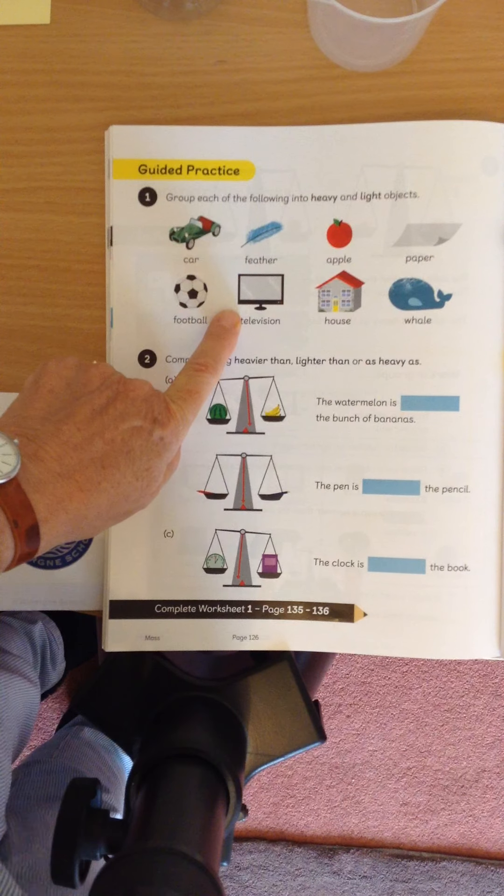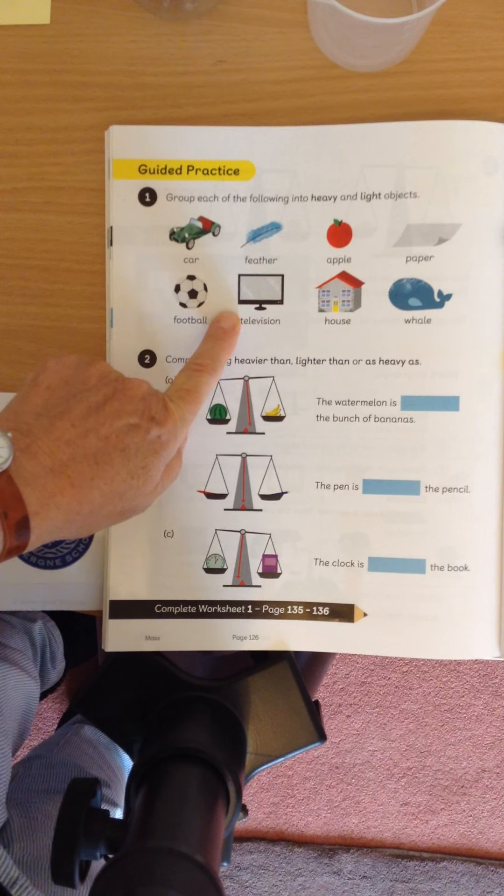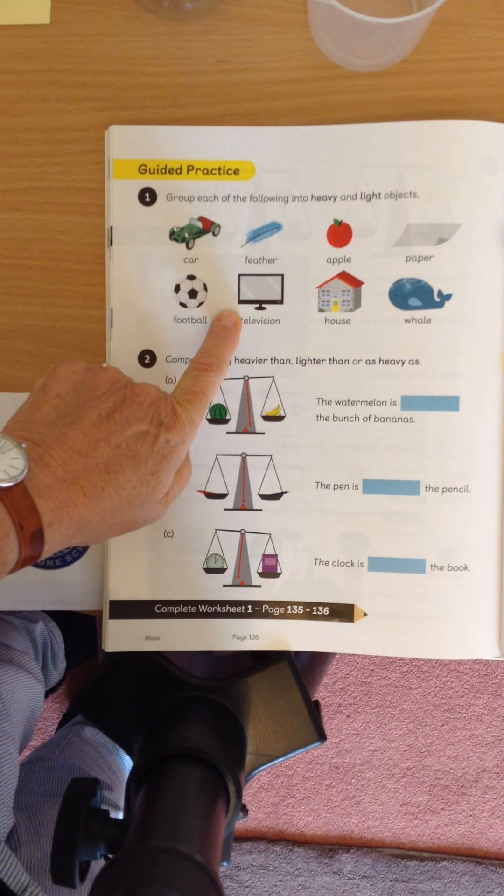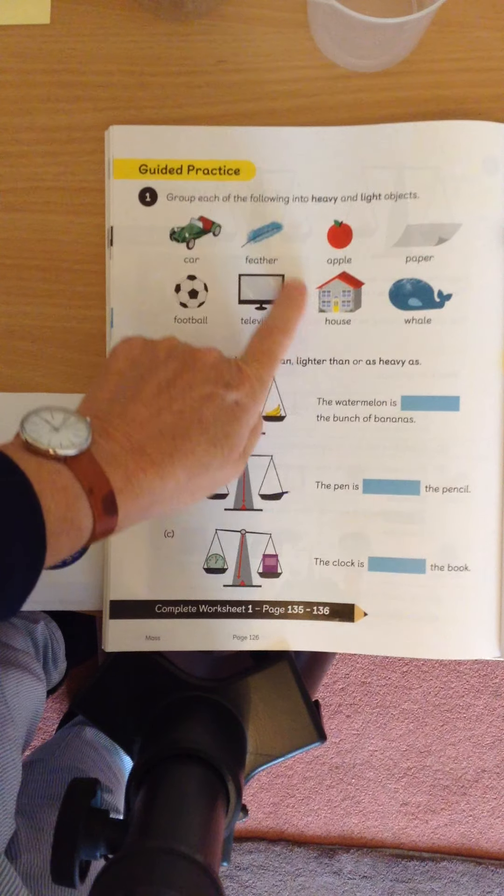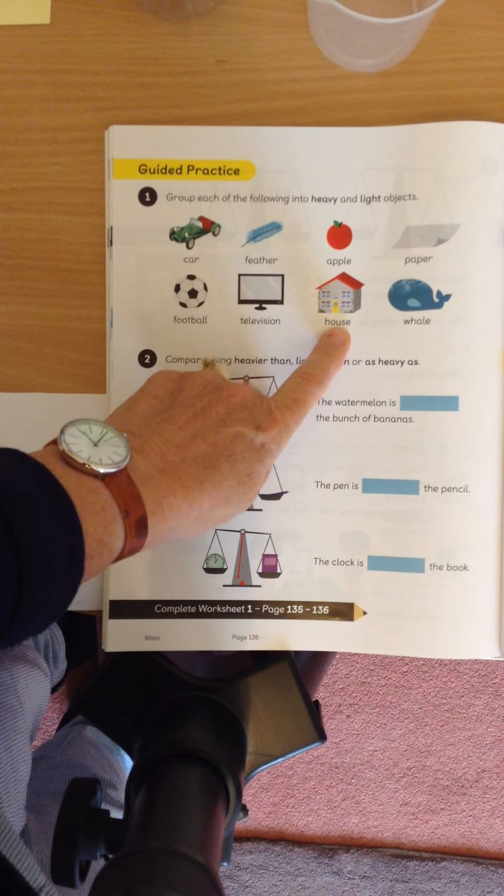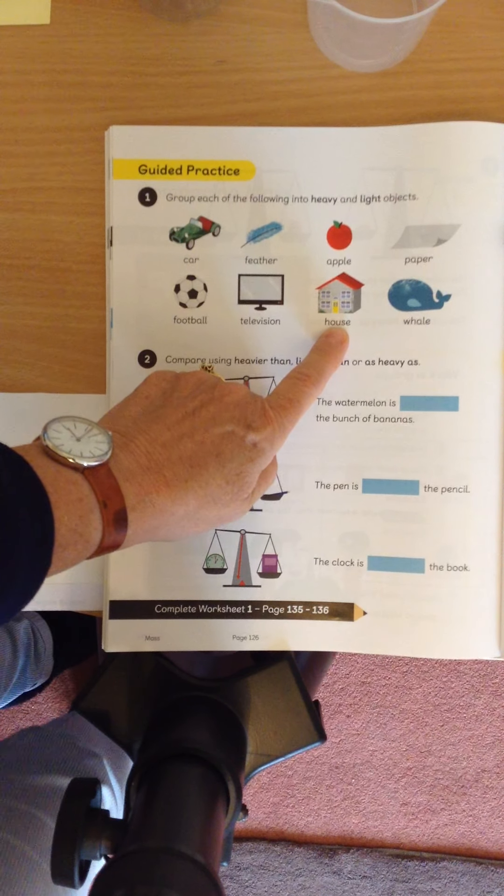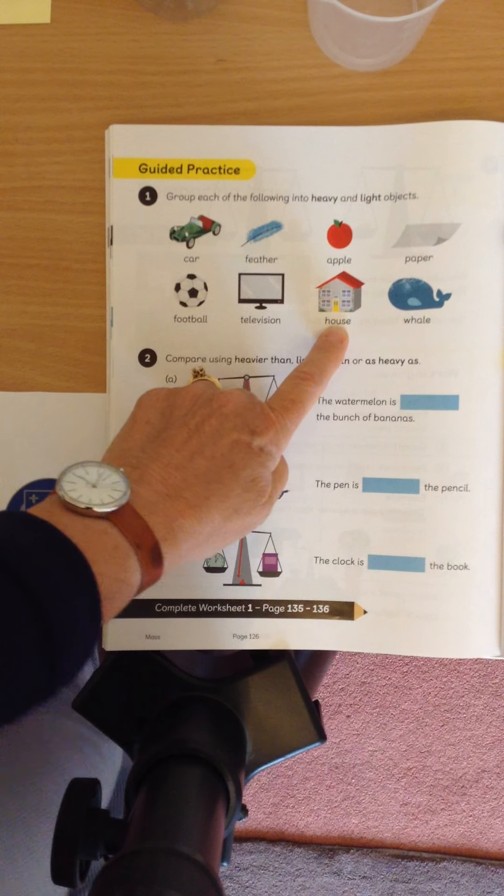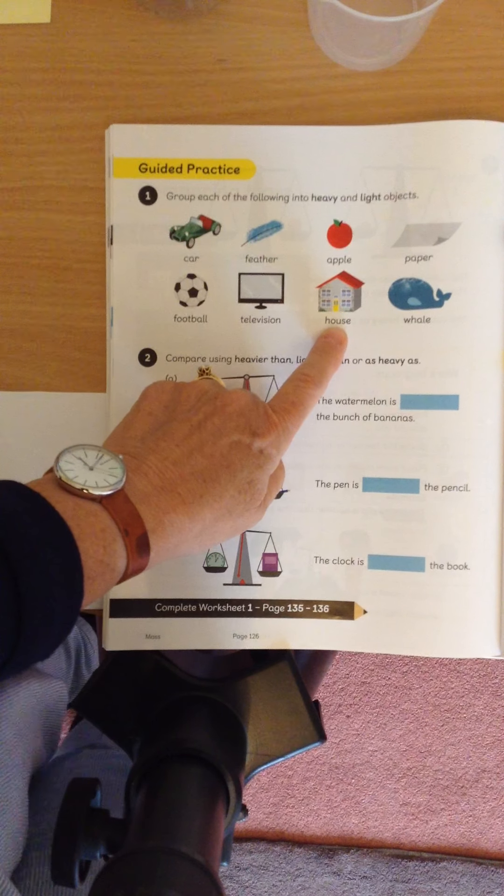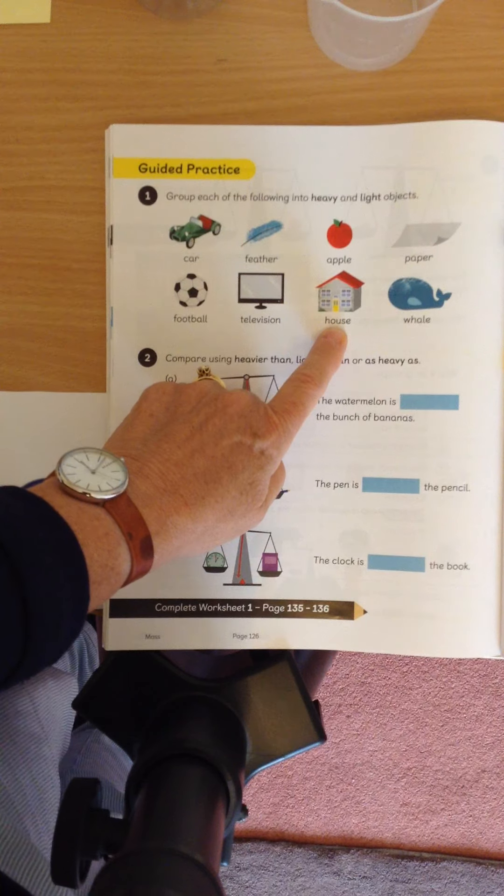A television. That's right, that's heavy. It's very hard. If somebody picks up a television, they often need two people to carry it because it's very heavy. A house. Oh my word. I don't think you can pick up a house. But a house. Is it heavy or light? Yes, it's heavy. You couldn't pick that up on your own. In fact, you need a crane to pick that up.